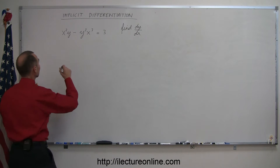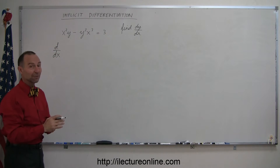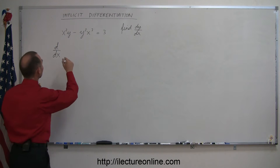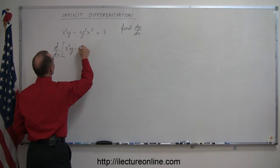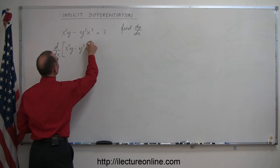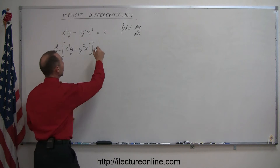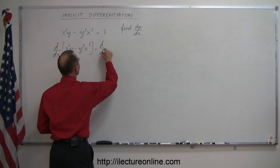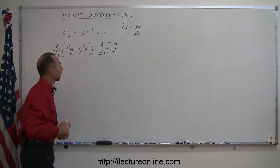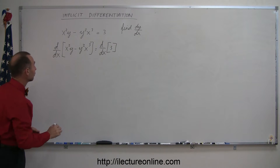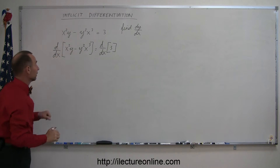So watch this. We take the d/dx — that's one way of saying I'm taking the derivative with respect to x of the left side of the equation — and set that equal to the derivative with respect to x of the right side. Now notice that here we have x squared times y; that's a product, so we're going to have to use the product rule here.